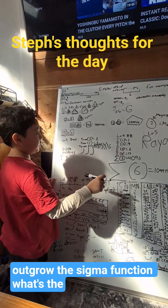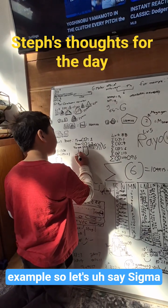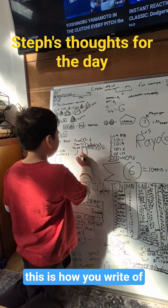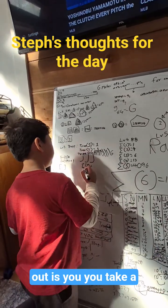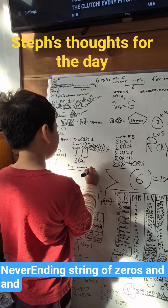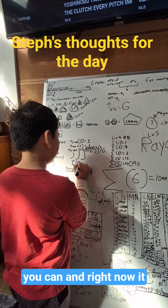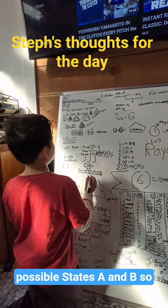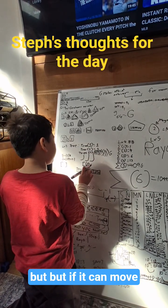So what's the Busy Beaver function? Here's an example. This is how you write Sigma of 2. The way you figure that out is you take a never-ending string of zeros. Since it's Sigma of 2, it can only have two possible states: A and B. Right now it's on state A, and it can move to the left or the right one place.